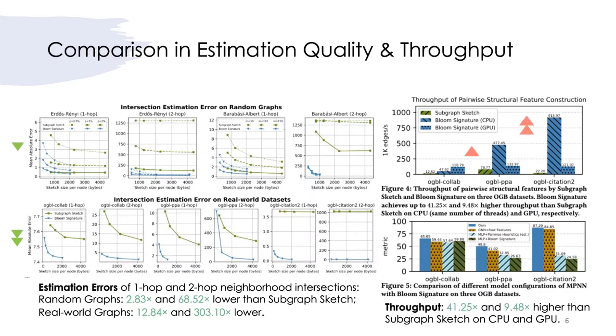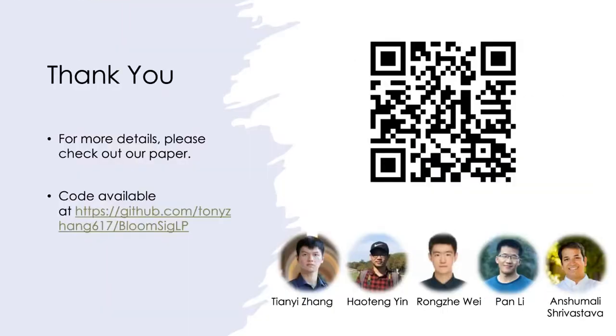In terms of feature construction efficiency, bloom signature has up to 40 times higher throughput than the competitive method subgraph sketch. For more details, please check out our full paper and source code. Thank you.